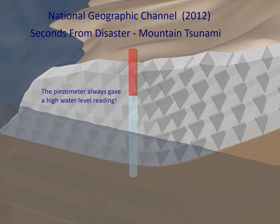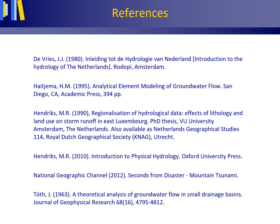Please take a look at the National Geographic channel video 'Seconds from Disaster: Mountain Tsunami,' available on the internet — and for Geo24203 students there is a link provided on Blackboard. Pay special attention to the one piezometer that always gave a high water level reading. With this, we have come to the end of Section 3.14 of my book. Geo24203 students, please make sure to complete the exercises, including individual Blackboard exercises and, optionally, the Online Resource Centre Multiple Choice Questions of Chapter 3. Good luck!